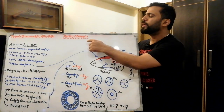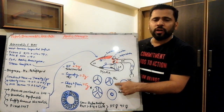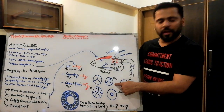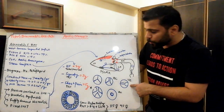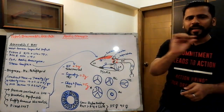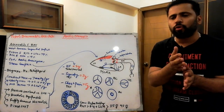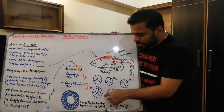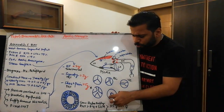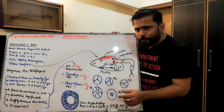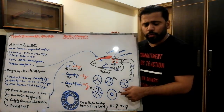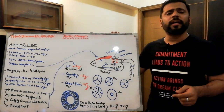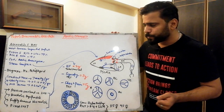Bicuspid aortic valve is the most important association of aortic stenosis to remember, because many diseases are associated with it. Unicuspid valve is when you appreciate only a single slit-like opening in systole. When there are no commissures at all and only a small slit-like opening across the aortic valve is seen, you label it a commissural aortic valve stenosis.